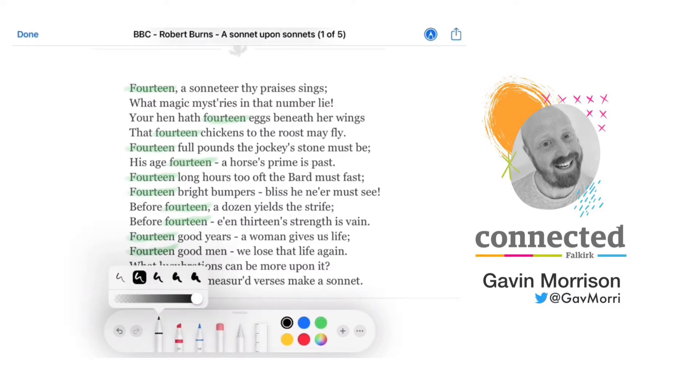I can then swap over to my pen and use that to label up the rhyme scheme of the sonnet to highlight that aspect of the poem to students.